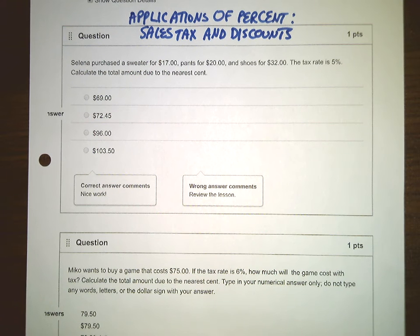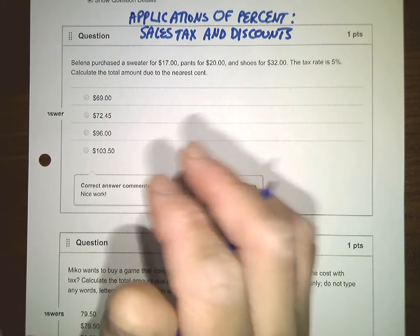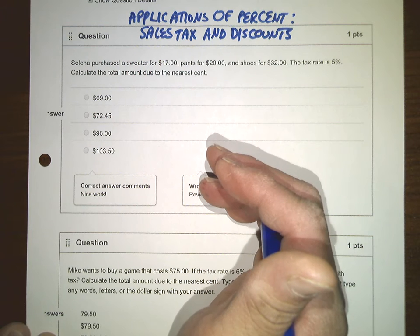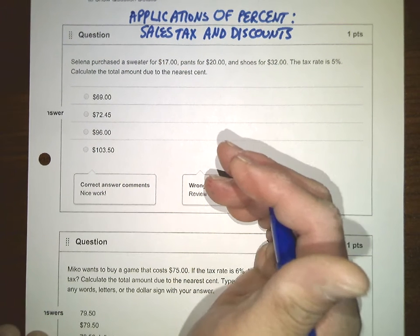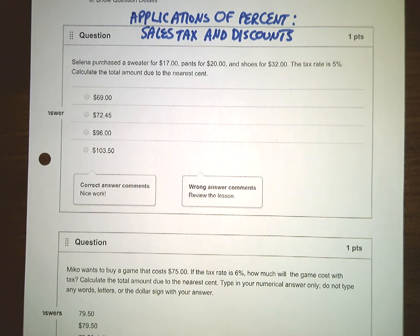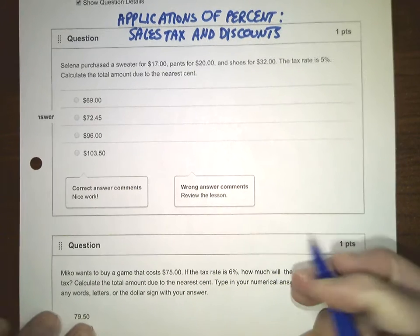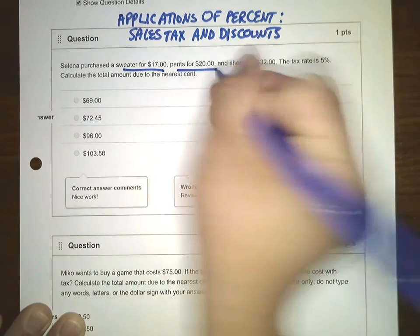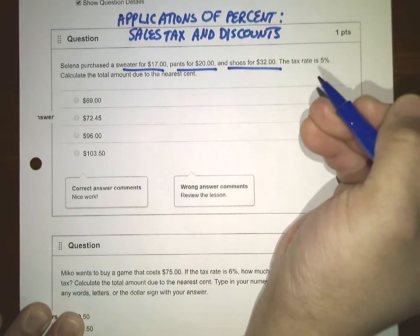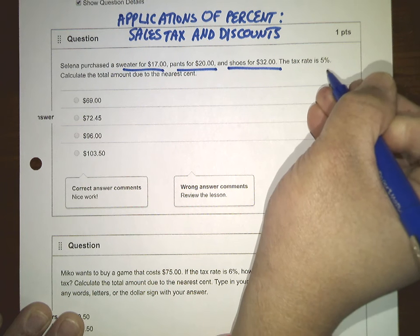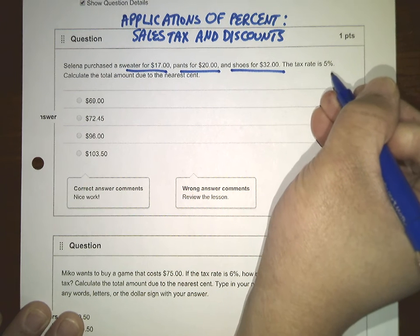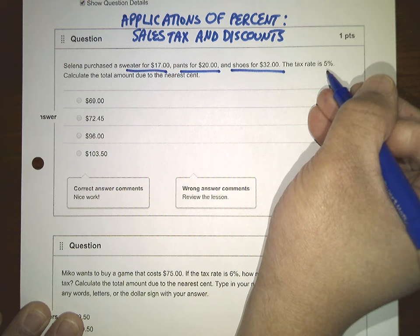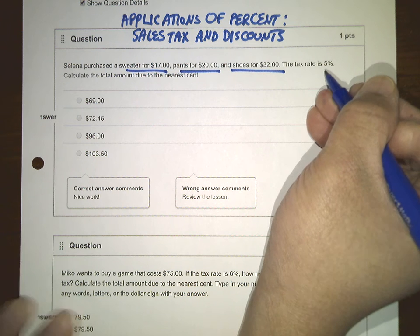Hi everyone, this is Professor Oaks and this video is about applications of percent, sales, tax, and discount. Here is the first example. Selena purchased a sweater for $17, pants for $20, and shoes for $32. The tax rate is 5%. Calculate the total amount due to the nearest cent.